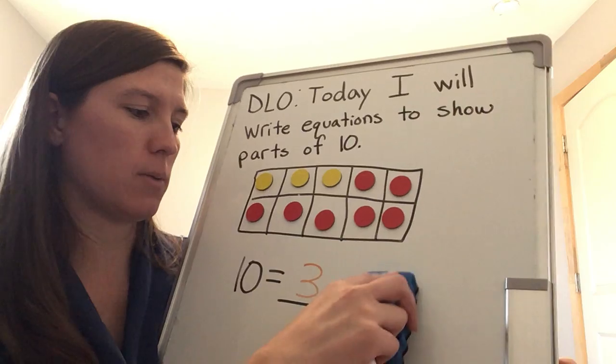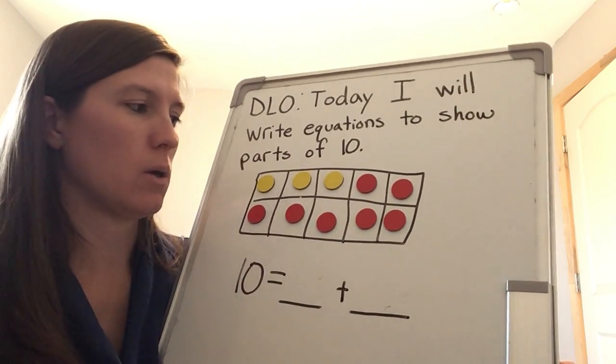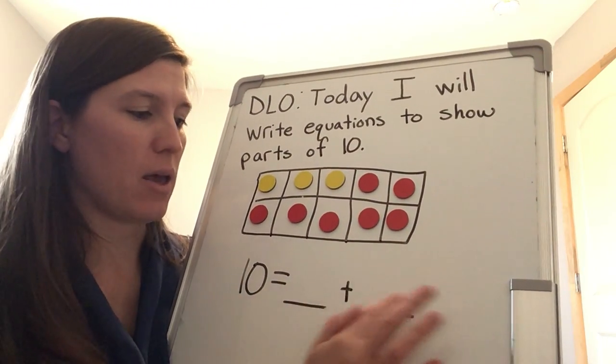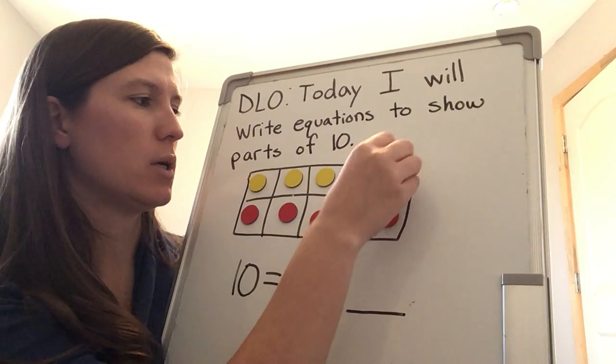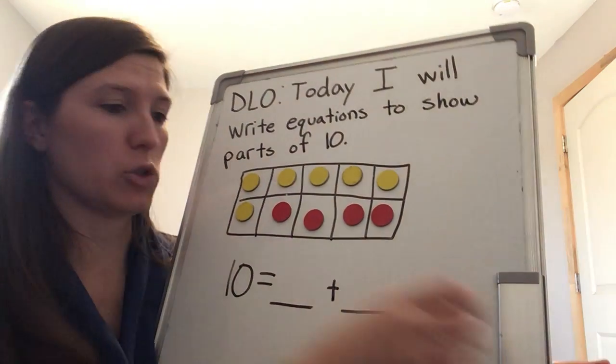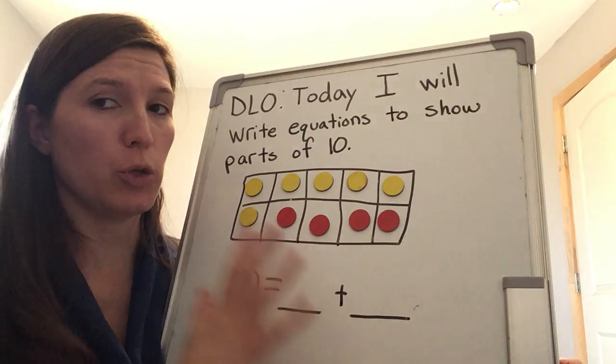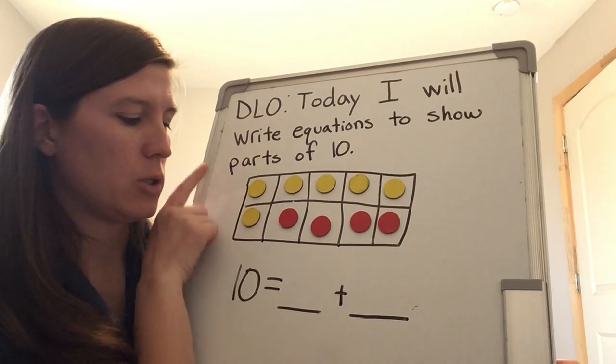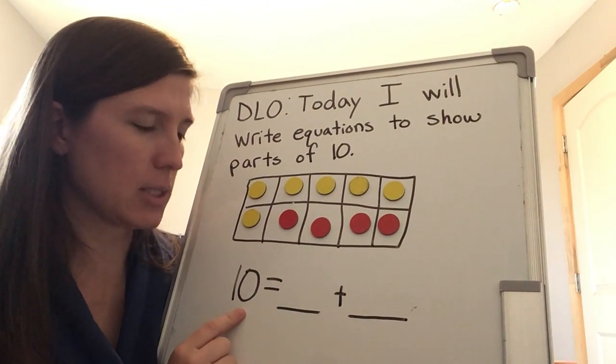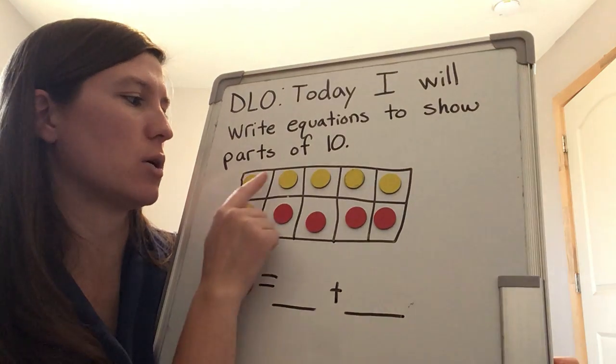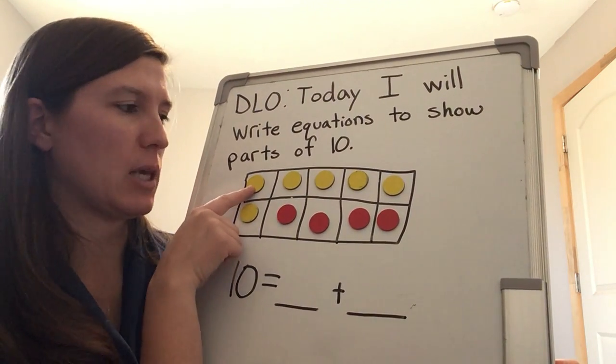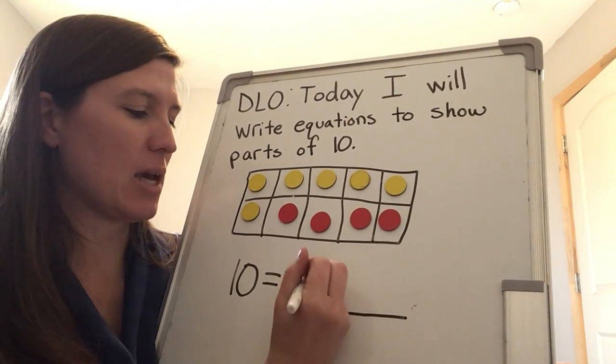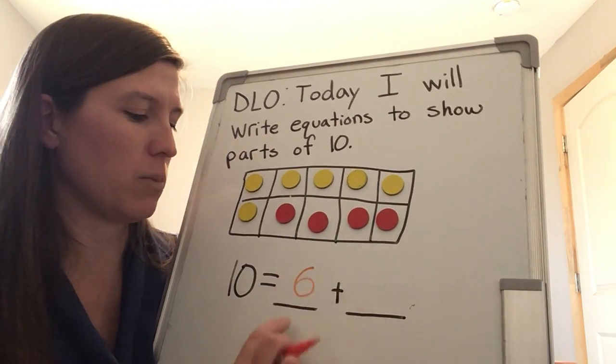Now let's do a new one. I'm just going to keep all of my magnets on here because if we're making 10, every window will be covered. Let's do this one. I'll start with my yellows. I have two groups, two parts I should say because it says parts in our DLO. I have two parts to make 10. Let's count up the parts we have first. Just like when we read and write, we start at the top on the left. Let's count. One, two, three, four, five, six. I have six yellows. So I'll write that first because that's the first blank.